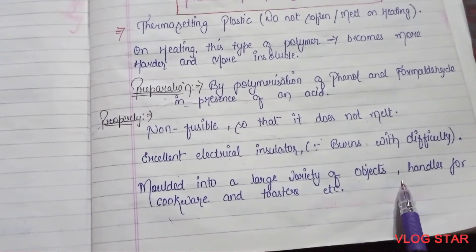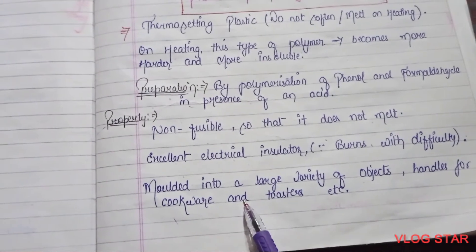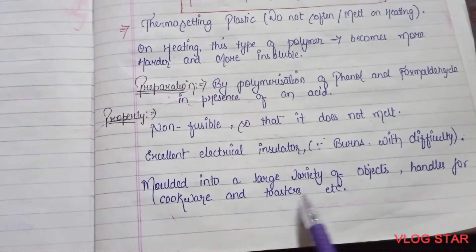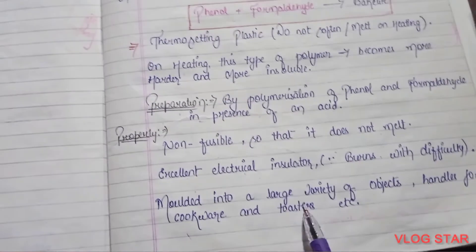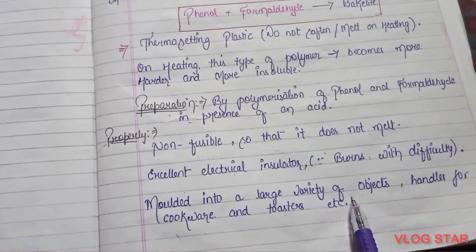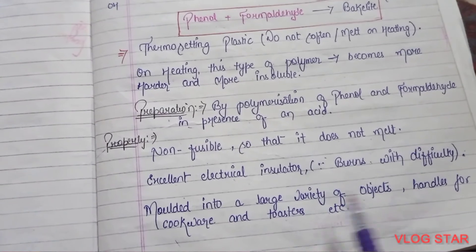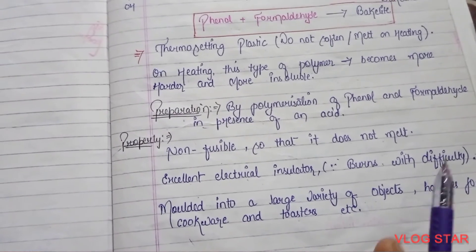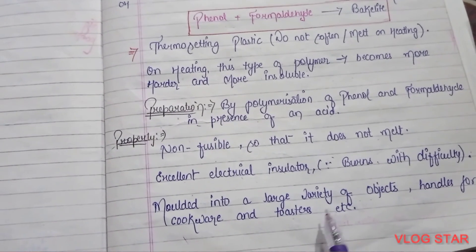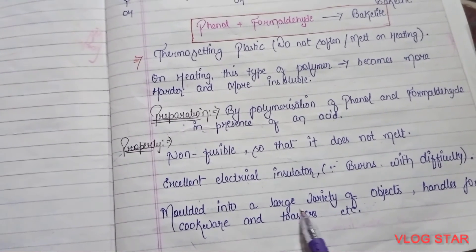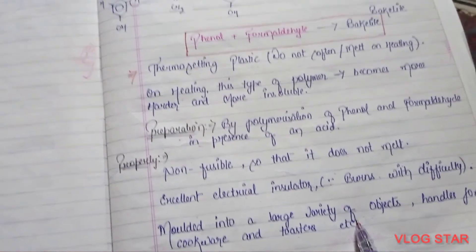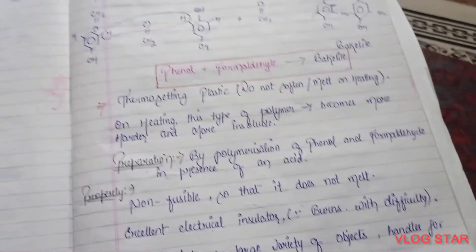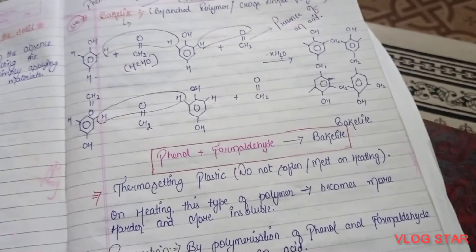Bakelite can be molded into a large variety of objects — handles for cookware and toasters etc. Yeh different varieties of objects mein use hoti hai: cookware jo hamare ghar mein utensils hote hain unke handles mein, aur different kinds of toasters mein use hoti hai. I hope this video was helpful.